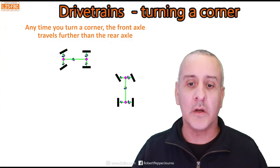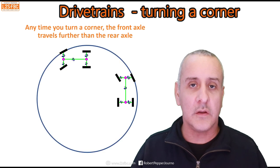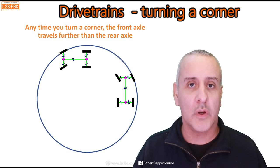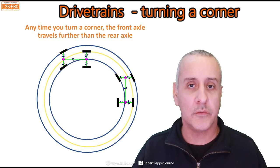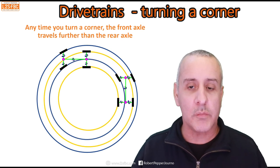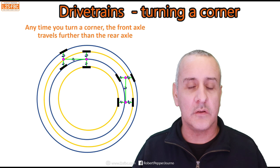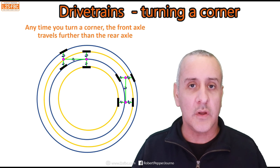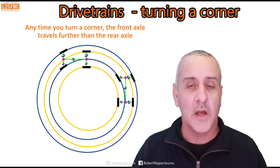Any time a vehicle turns a corner, the front axle has to travel further than the rear axle. The circles here represent the paths each wheel takes around the corner — the front wheels trace larger circles than the rear wheels. Therefore, going around a corner the front wheels have to rotate quicker because they travel further than the rear wheels, and that is at the heart of understanding wind-up.